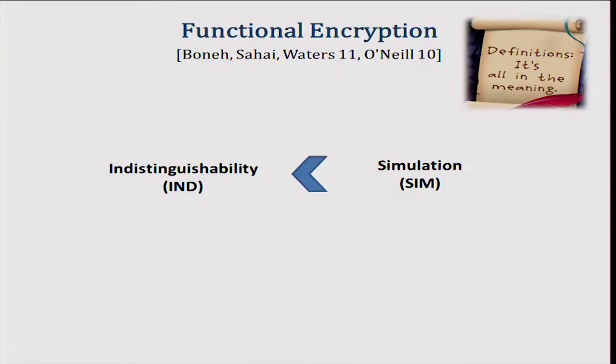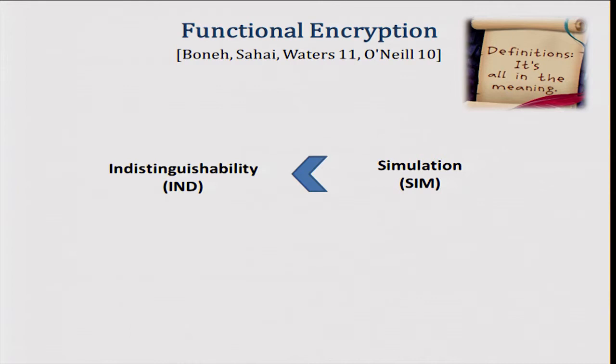There are many definitions for functional encryption. We have a simulation-based definition — if you're familiar with MPC or zero-knowledge simulation, you can think of this as being about the same — where we require the existence of a simulator who is supposed to produce a distribution identical to the real world. We also have this notion of an indistinguishability-based definition, which is a weaker notion; for some classes of functions it actually doesn't hide anything about the input X.